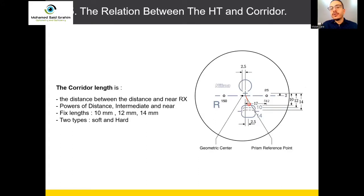This is the corridor lens. The distance of the corridor is between the distance and near Rx — distance, intermediate, and near. For fixed lenses, we have corridor 10, 12, and 14, between two types of corridor: soft and hard.